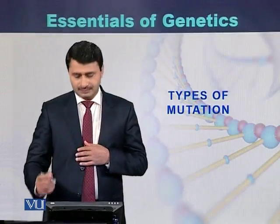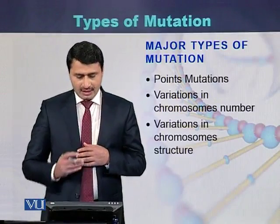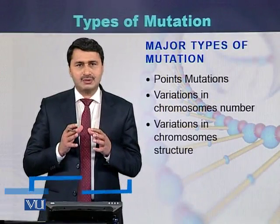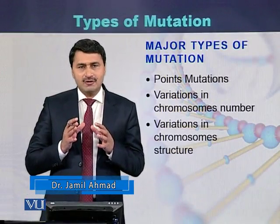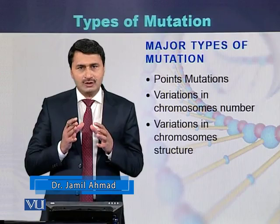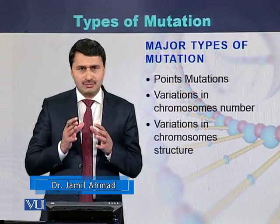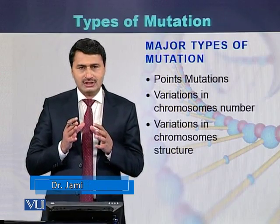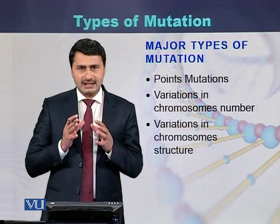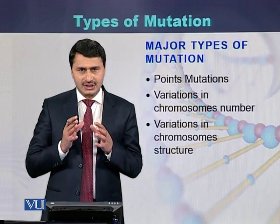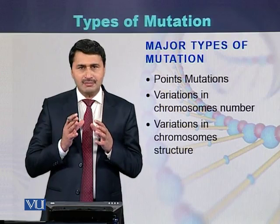Types of mutation. There are three major types of mutations: point mutations, variation in chromosome number, and variation in chromosome structure. Some geneticists do not consider that variation in chromosome structure and number are mutations.